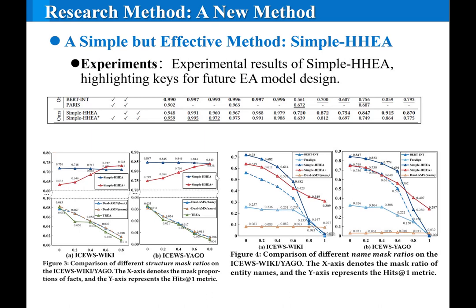Experiments on our proposed datasets showed that Simple HHEA performs better, providing that adaptability and efficiency, and the ability to extract clues from highly heterogeneous data are crucial for future entity alignment method design.